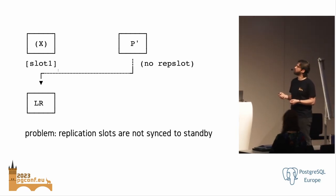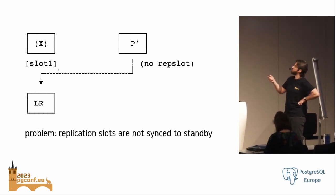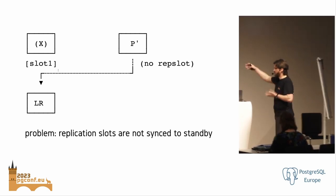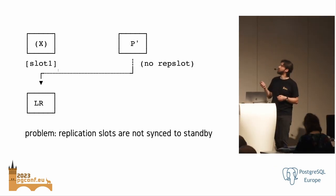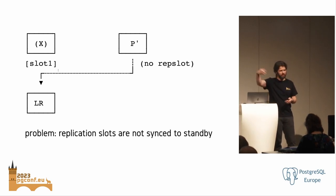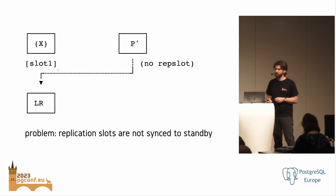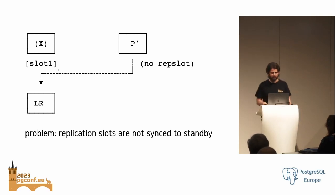In the failover scenario I described, the replication slot exists on the old primary, but the failover doesn't move it to the new one. So the logical receiver connects and says 'I want to keep replicating from slot one,' and the new primary just says 'there's no slot one.' A hackish workaround is to manually create a new slot with the same name, but that would lose data between the failover event and when you create the slot.